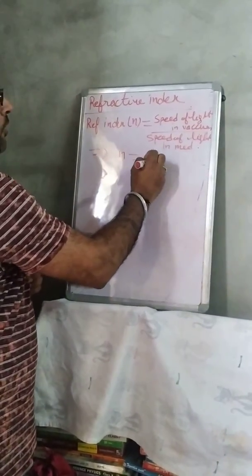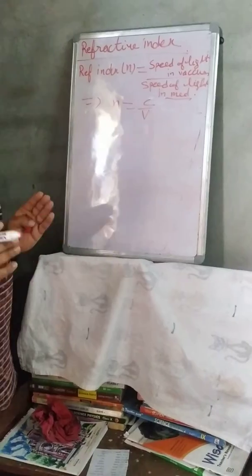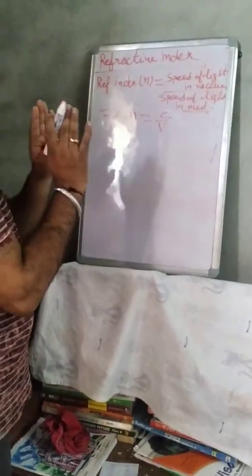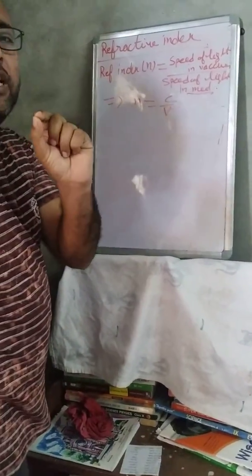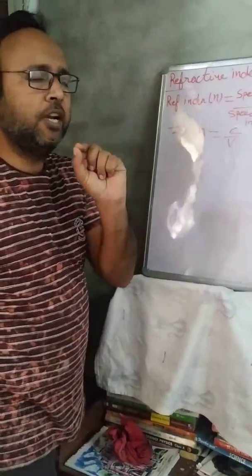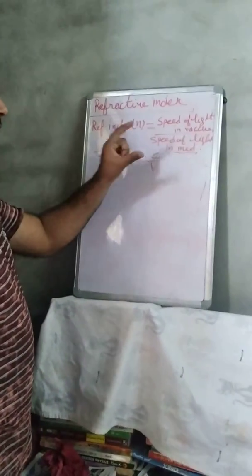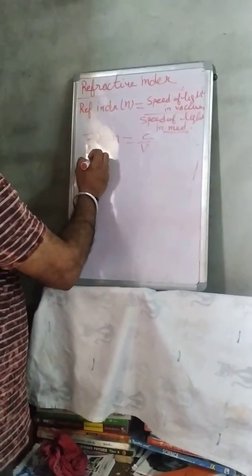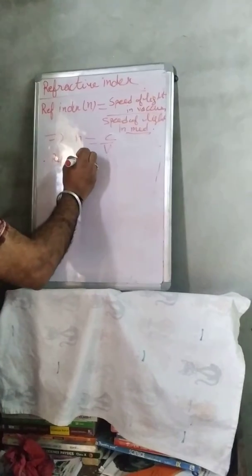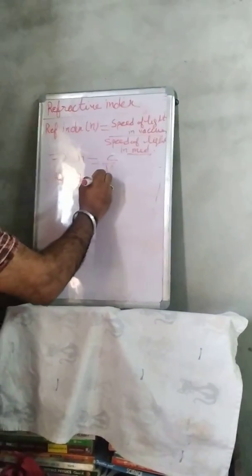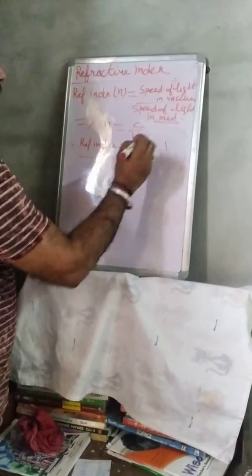n is equal to c over v. If I take this medium as air, the speed of light in air is very, very little bit different from the speed of light in vacuum. That's why the refractive index of air is equal to 1.